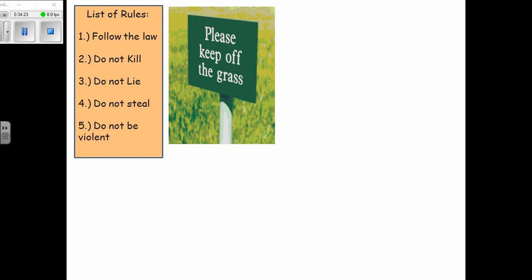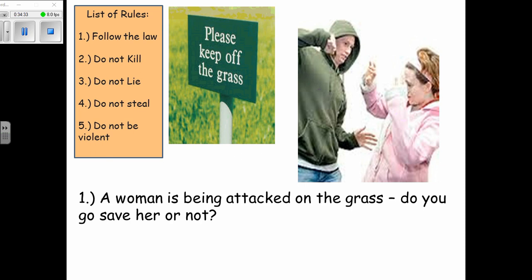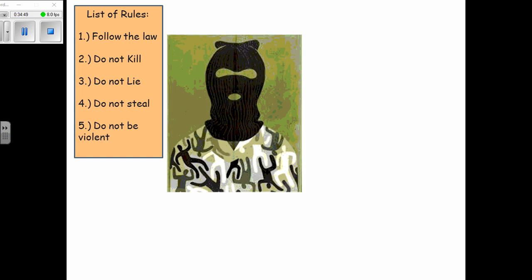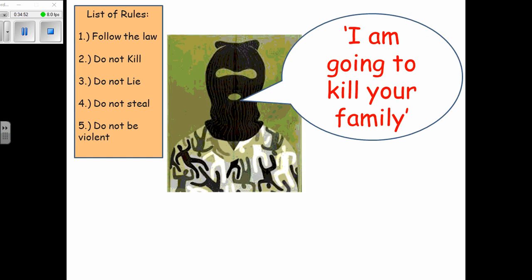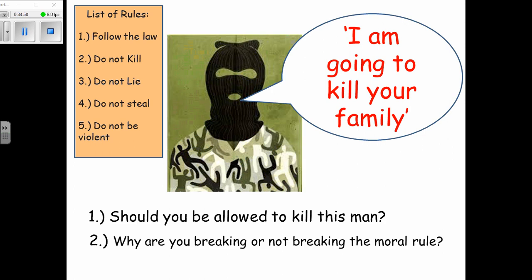Imagine a sign says keep off the grass, and then you see someone being beaten up on the grass. Most people would say of course you break that law. The legalist might say you cannot go on the grass. Situation ethics is about doing the right thing despite laws. If someone is about to kill your family, the legalist says you cannot kill this man, but the situationist says you should be allowed to kill in this situation because it is the most loving thing to do to protect your family.